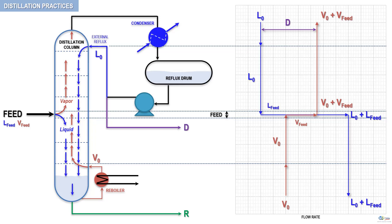In a similar manner, at the bottom of the distilling column, the residue flow rate can be symbolically represented as the difference between the liquid flow rate, L0 plus L_feed, and the boil-up flow rate.